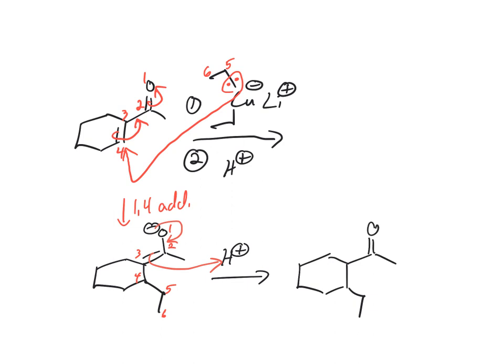This is our final 1,4 addition product. What happens to the copper? The copper is not charged anymore. Your lithium plus is balancing your charge. The copper is just along for the ride as copper 1 with one bond. In step 2, you reset your charges. Negative charge and a plus charge end up being neutral for the final product.